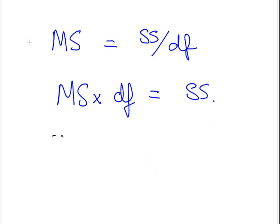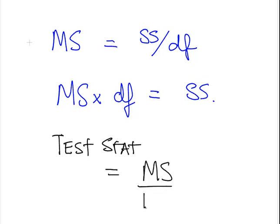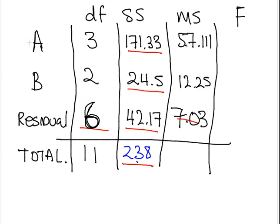Test statistic is essentially the mean square divided by the mean square for residual, also known as the mean square for error. So that is 57.111 divided by 7.03, which gives me 8.12. And in the second case, it is 12.25 divided by 7.03, and that is 1.74. So that's our table all calculated.